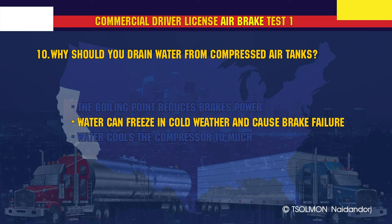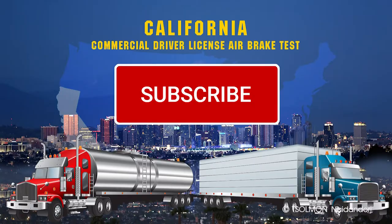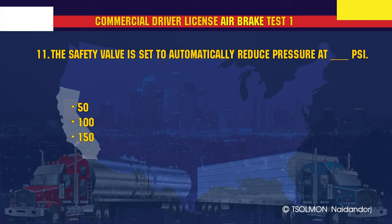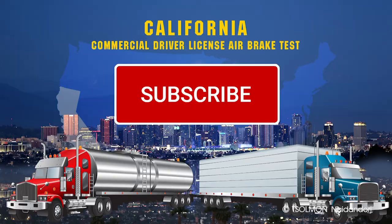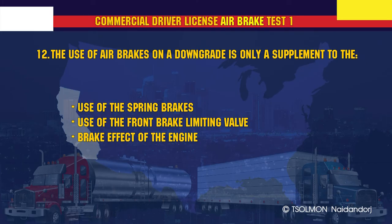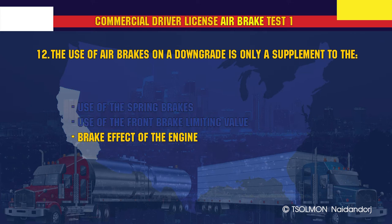The safety valve is set to automatically reduce pressure at 150 PSI. The use of air brakes on a downgrade is only a supplement to the brake effect of the engine.